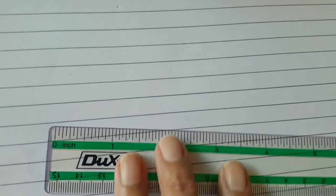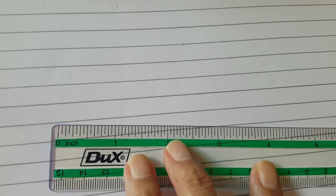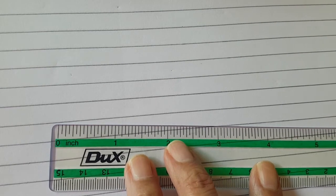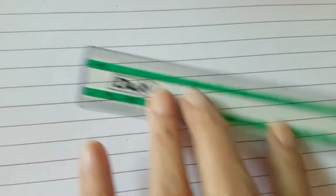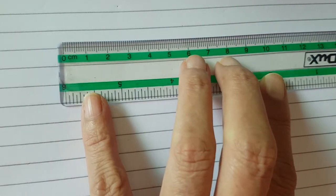Assalamu alaikum dear children. Now question 2 of exercise 11b is there. The question is saying draw a line AB of length 5.2 centimeter, so we will draw a line of 5.2 centimeter on the notebook.